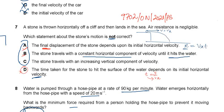Option C: the stone travels with an increasing vertical component of velocity. This is also true — when the stone is thrown horizontally, the initial vertical component is zero. But gravity then acts on it, so the vertical component increases from zero, and just before it hits the sea the vertical velocity is at its greatest.